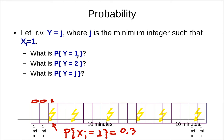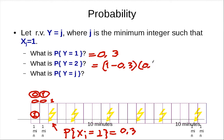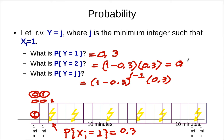What's the probability that Y equals 1? It means you get a 1 the very first time, so that's 0.3. What's the probability that Y equals 2? The first one has to be 0 and the second one is 1, so this is (1 - 0.3) × 0.3. In general form, the probability that Y equals j is: the first j minus 1 times you fail, and the last time you succeed — so it's 0.7^(j-1) × 0.3.